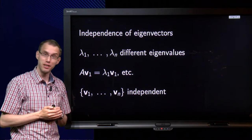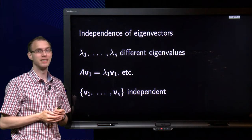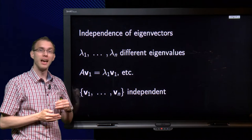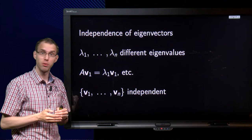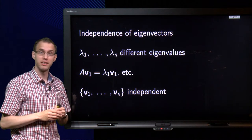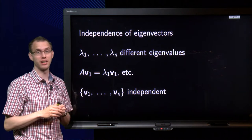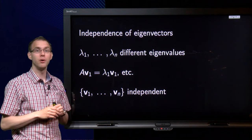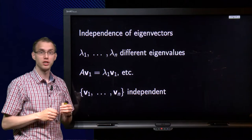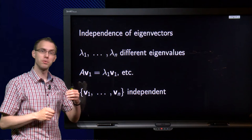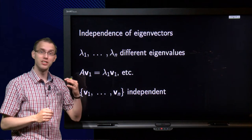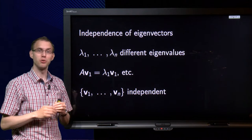Eigenvectors belonging to different eigenvalues are independent. That is nice to know, of course, if we are looking for them. It also assures that your matrix P is invertible — if the eigenvectors for each eigenvalue are independent, they do not interfere with each other. This video will show why this is the case, using a method called induction to prove this, so you have at least two good reasons to watch.